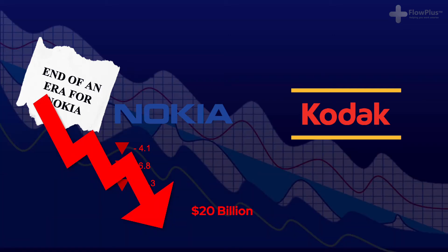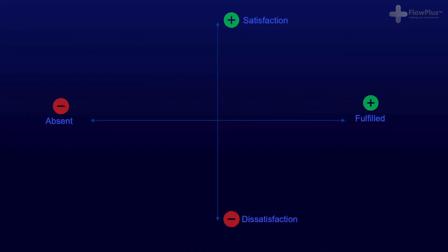This is what the Kano model looks like. On the X axis we have a sliding scale between absent and fulfilled, and on the Y axis we have customer satisfaction on a scale from dissatisfied to satisfied.